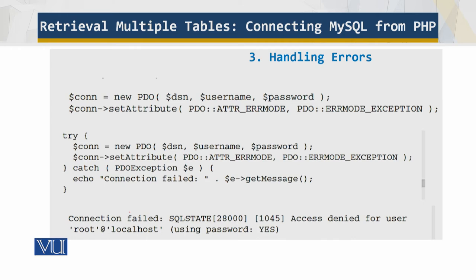To set PDO to raise exceptions whenever a database error occurs, you use the PDO setAttribute method to set your PDO object's error mode. You can then capture any error that might occur when connecting to the database by using a try-catch block. In a sophisticated application you would probably log error messages to a file and possibly send an email to the webmaster. PHP runs the code within the try block; if an exception is raised, the catch block stores the PDO exception and displays the error message.